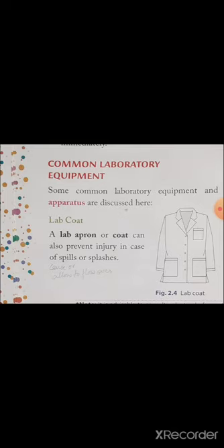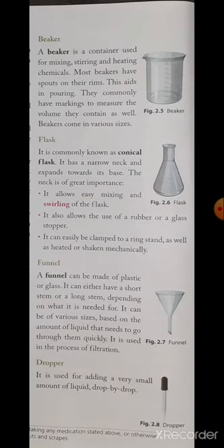Now we have to explain that is the beaker. Beaker you know it is a container used for mixing, stirring and heating chemicals. Most of the beakers you have seen it has got spouts on their rims. This is used to help in pouring. They commonly have markings to measure the volume because they are of different sizes. It may be of 50 ml, 100 ml, 200 ml, 500 ml. This type of beakers you can get in the chemistry lab.